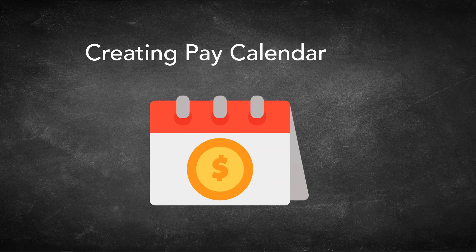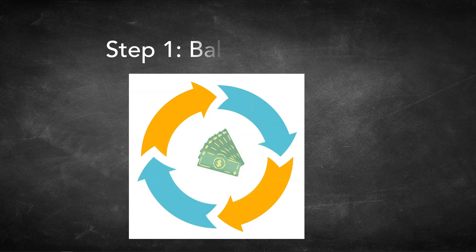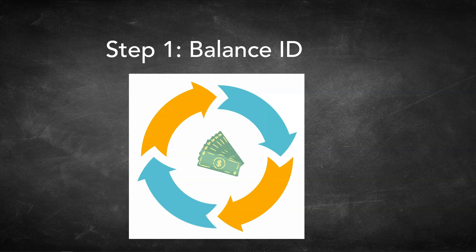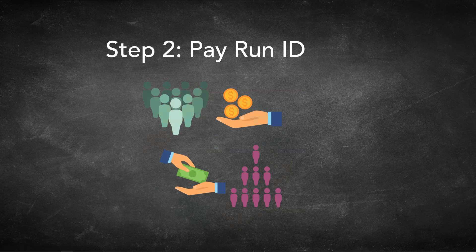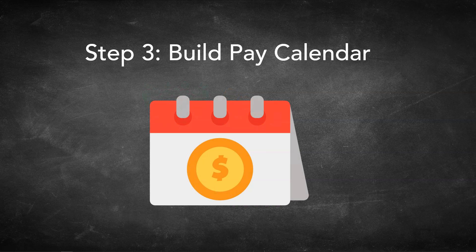We are almost there. Soon we will wrap up our payroll setup. We need to create a pay calendar for our pay group. A pay calendar schedules pay cycles for pay groups — in other words, it decides how often a company pays employees belonging to a specific pay group. To create a pay calendar, we need three steps. Step one: create a balance ID, which defines the pay period with begin and end dates and creates cycles for payroll processing. Step two: create a pay run ID, which allows running payroll for multiple pay groups at once. Step three: run a process to build the pay calendar.